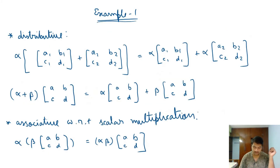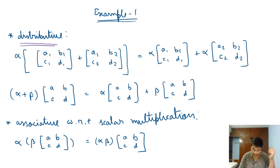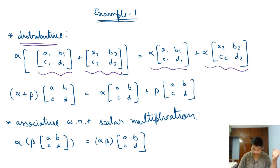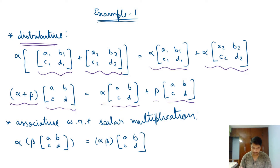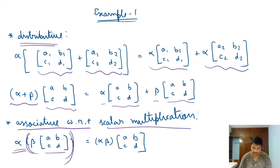The distributive property with respect to vectors — alpha times (v₁ + v₂) equals alpha·v₁ + alpha·v₂ — is satisfied with our addition and scalar multiplication rules. The distributive property with respect to scalars — (alpha + beta)·v equals alpha·v + beta·v — is also satisfied. The associative property with respect to scalar multiplication, alpha·(beta·v) = (alpha·beta)·v, is satisfied as well.